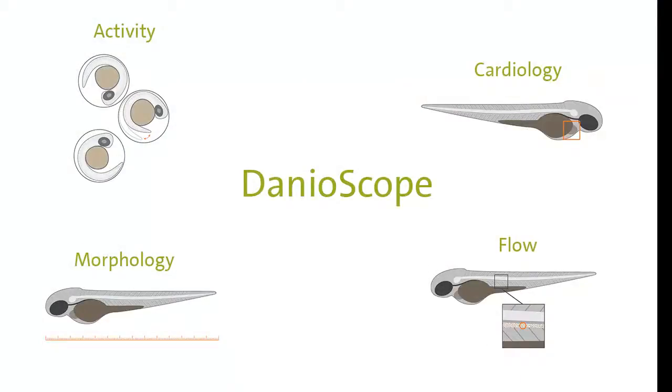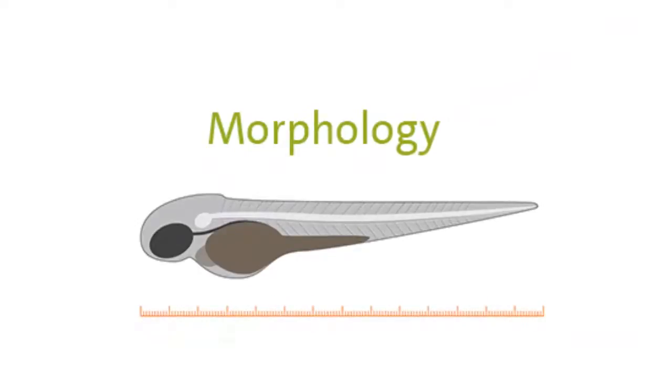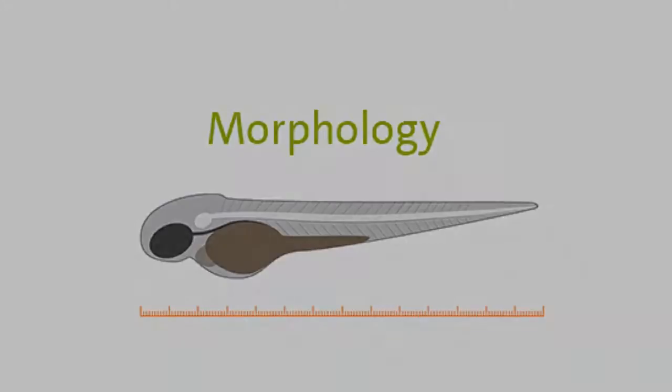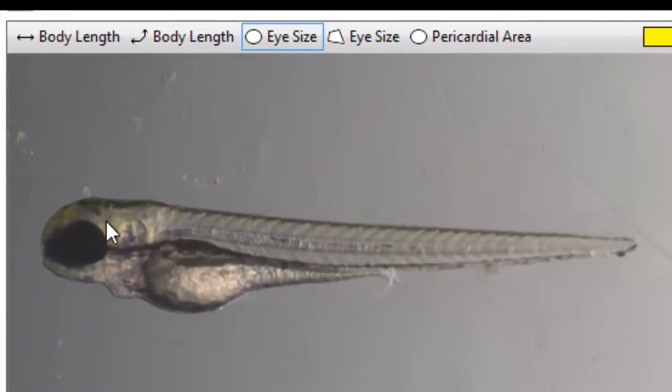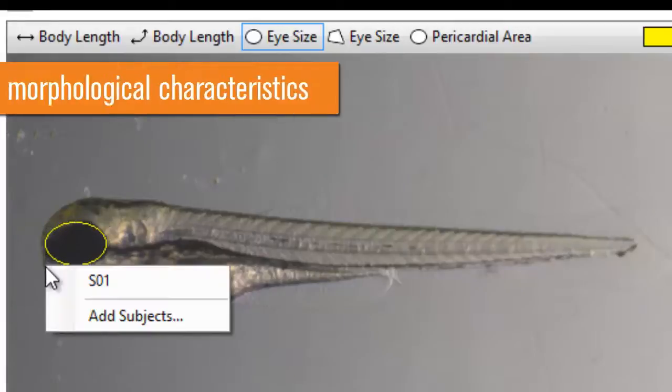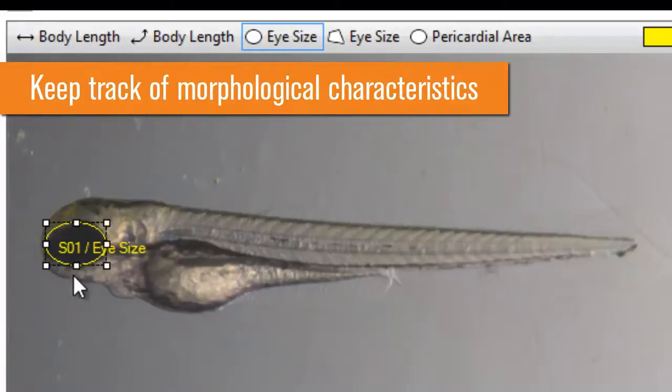DanioScope also includes a tool to keep track of morphological characteristics. After calibration, you can measure eye size, body length, or any other parameter that you're interested in.